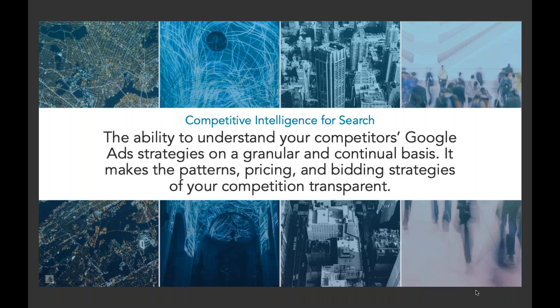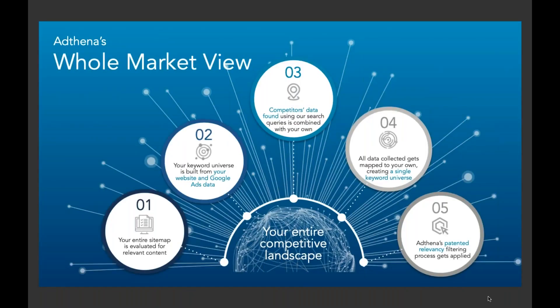The last term I like to highlight is transparent. CI is about accountability — making your competition, and in many ways Google, more transparent. With that definition in check, here's how we use CI to breathe life back into campaigns. At Athena, our solutions are powered by our whole market view technology — a dynamic, AI-driven data model unique for each advertiser, representing their entire relevant search landscape. With our patented machine learning technology, the whole market view provides comprehensive data scope and quality.